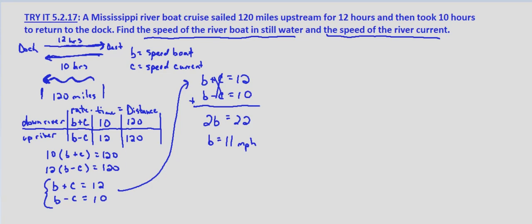And now we'll substitute this into either of our equations. I'm going to use both to solve for the other. So B plus C equals 12. So 11 plus C equals 12. Subtract 11 from both sides, and we get C equals 1 mile per hour.